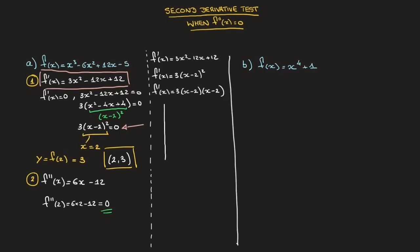Each of the three factors in f'(x) will be one of the rows of my sign table. The very top row represents the possible values of x. Since f'(x) is defined for all real numbers, I write negative infinity on the far left and positive infinity on the far right. Since f'(x) = 0 when x = 2, I add that to the row, creating a column through the table. The first factor is just 3, and regardless of what x does, 3 is always positive — so I write plus and plus.